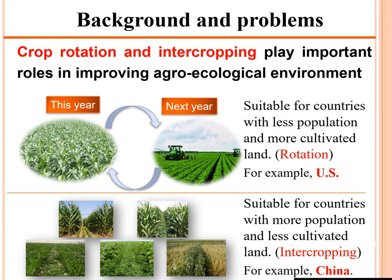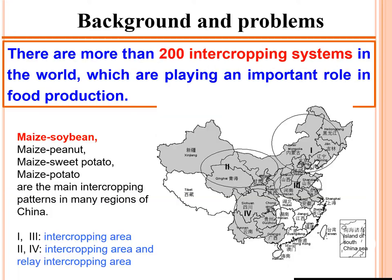There are two main cropping practices in the world: crop rotation and intercropping, which play an important role in improving the agro-ecological environment. Crop rotation is suitable for countries with less population but more cultivated land, such as the United States, Canada, and Australia. Intercropping systems are suitable for countries with more population and less cultivated land, such as China, Pakistan, and India.